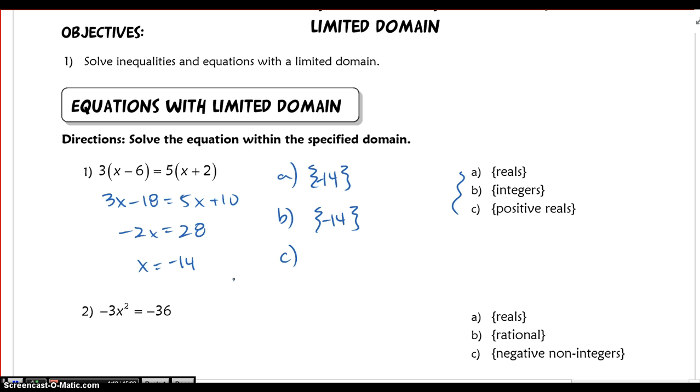Now in part C, it's asking only for positive reals. So we have to decide, is negative 14 a positive real? Since it is not a positive real, we have an empty set. We can also denote this with no solution because there are no valid solutions within this restricted domain.